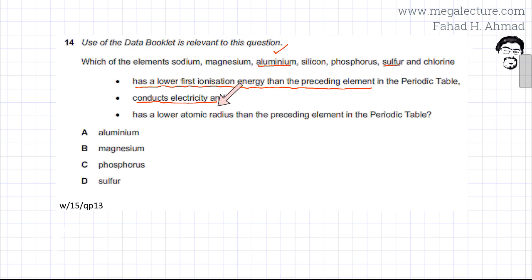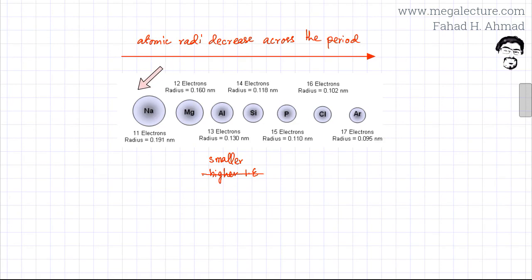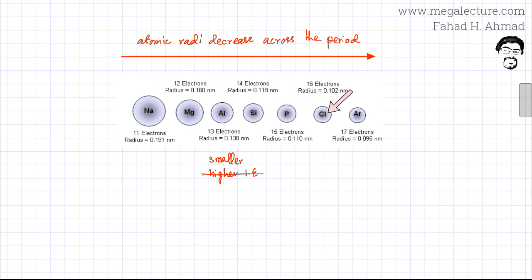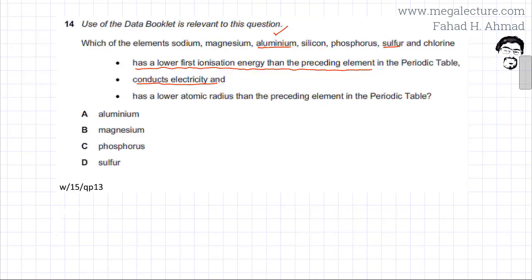Based on these two statements, that just leaves us with aluminium as the only true option. But let's look at the third statement as well: the element should have a lower atomic radius than the preceding element in the periodic table. I've plotted the atomic radii of all the elements, and as you can see, as you move across the period, the atomic radius decreases — because there are more protons, so the electrons are attracted more strongly to the nucleus and the size of the atom decreases. So aluminium has a smaller atomic radius compared to the preceding element, magnesium. The third statement also confirms it is true for aluminium.